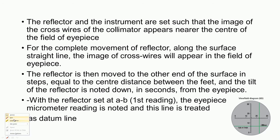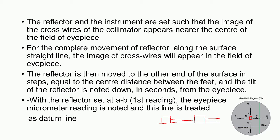Inside the view field, we have cross hairs and a scale. When the workpiece is perfectly straight, the incident ray and reflected ray are on the same line and there is no error — the spot is at the center. If there is any error, the reflected light falls off-axis at some angle theta, and we get a displaced light spot. This reading is taken at all locations.